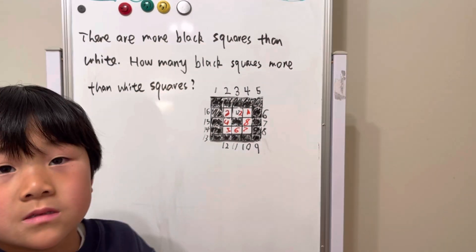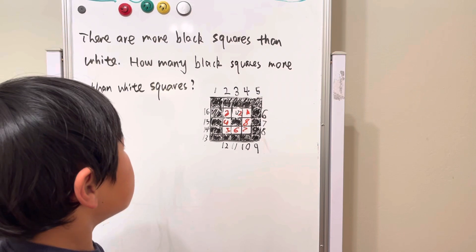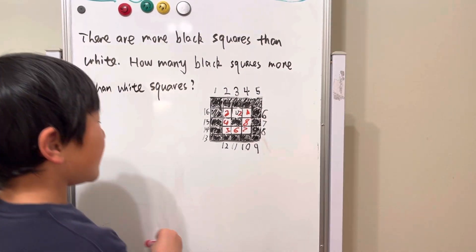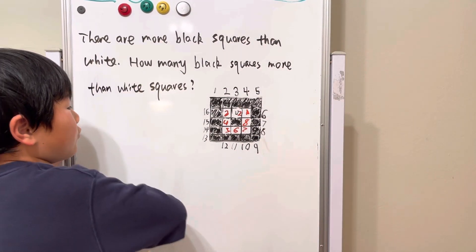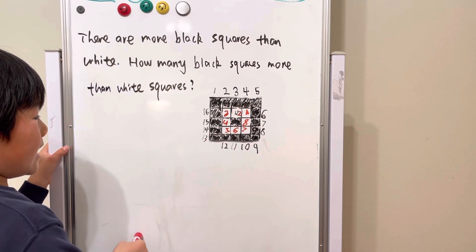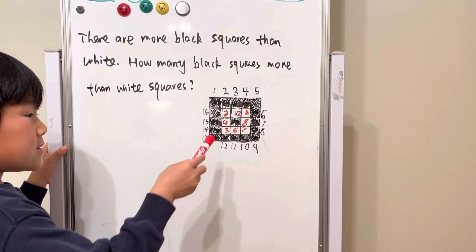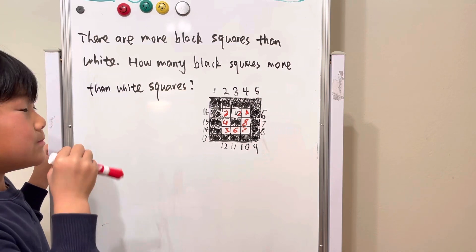So, there's eight. So, there's eight. So, there's eight white squares and seventeen black squares.